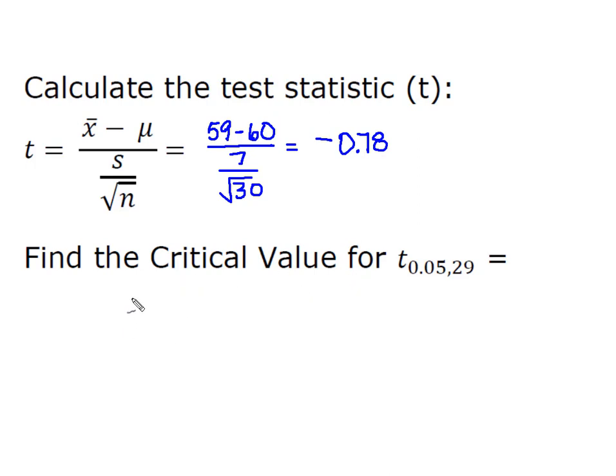So now I need a critical value. And remember I was testing at an alpha of 0.05. And I had a sample size of 30, which gave me degrees of freedom equal to 29. And because I was running a one-tail test, all of that alpha is in one tail.